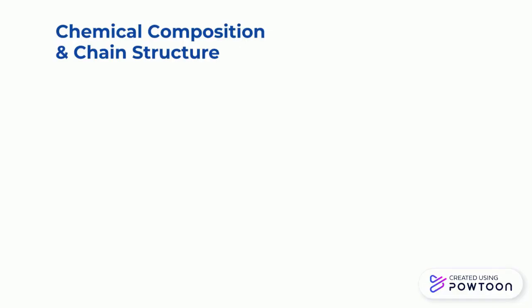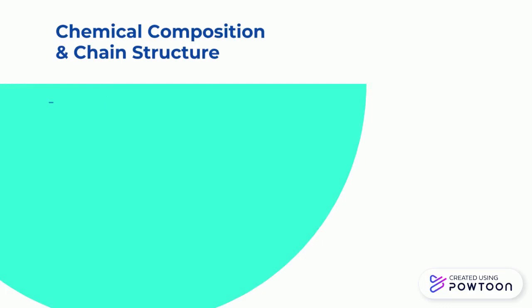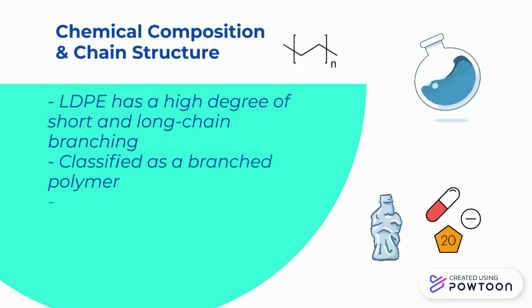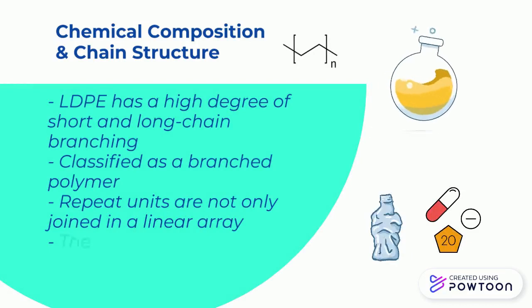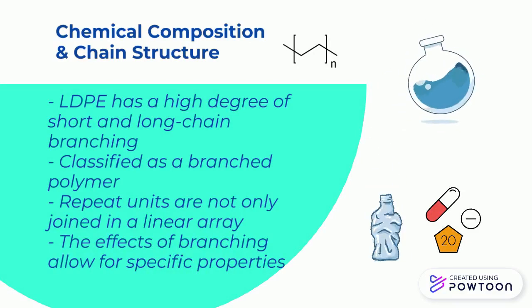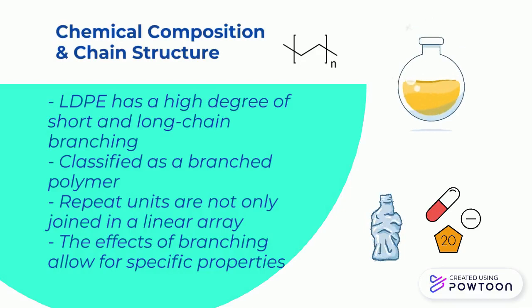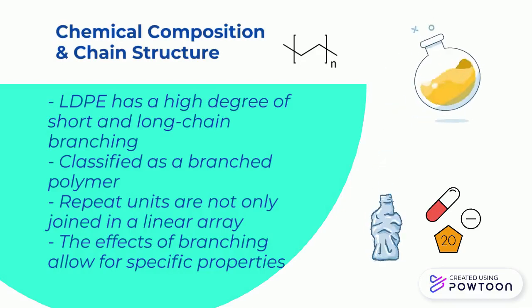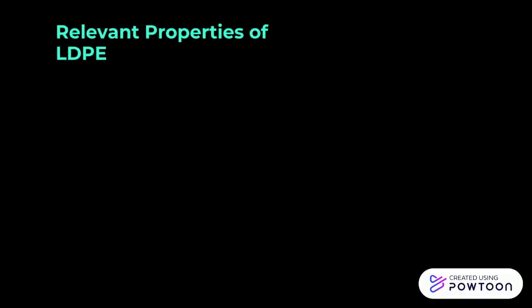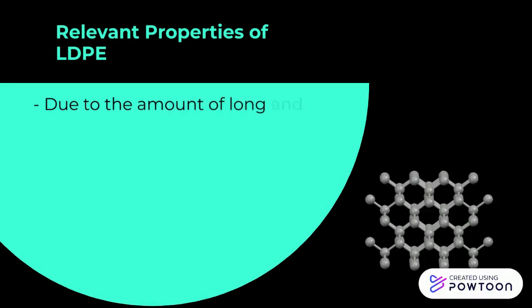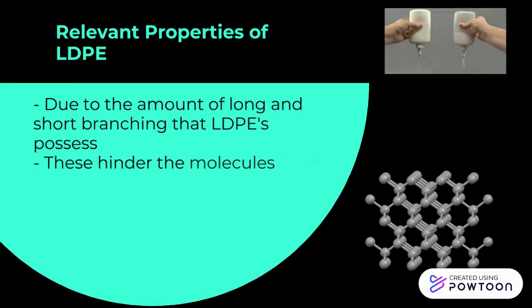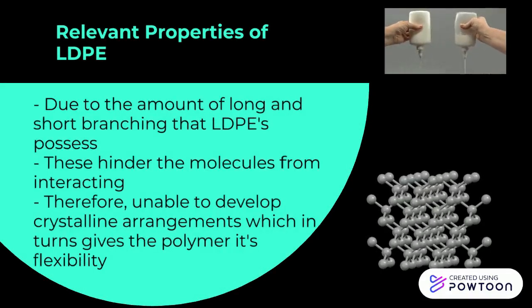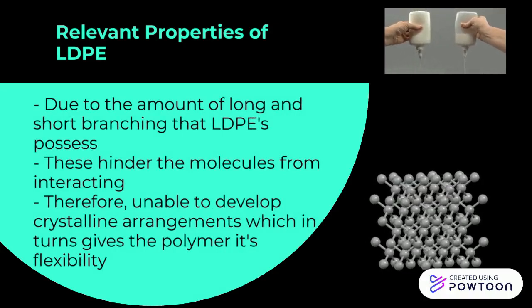Let's talk about LDPE's chemical composition and chain structure. They have a high degree of short and long chain branching, which classifies them as a branched polymer, meaning their repeat units are not only joined in linear arrays. An important feature of LDPEs is the amount of long and short branching they possess. This hinders molecules from interacting with each other, which in turn gives the polymer its flexibility.